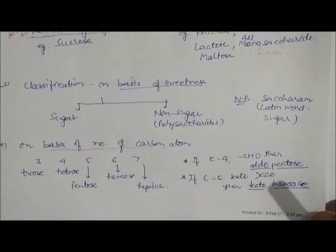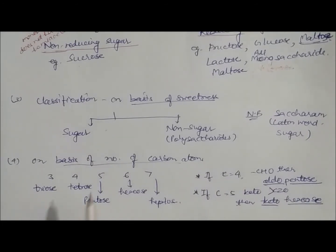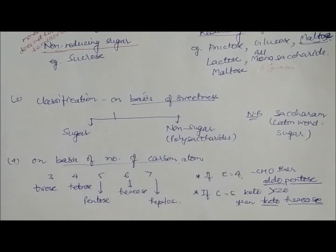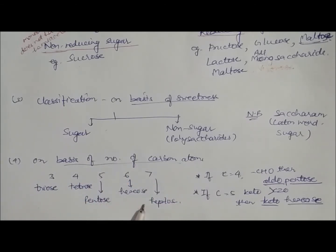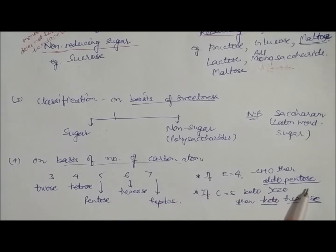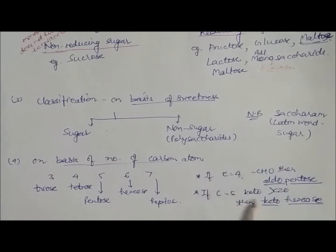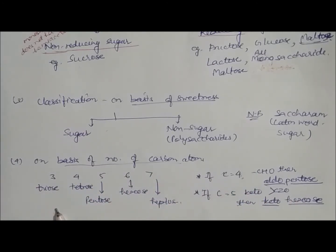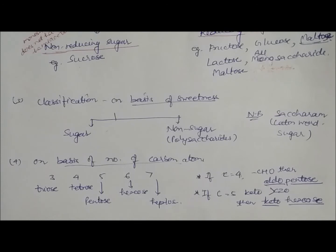On the basis of sweetness, carbohydrates are divided into sugars and non-sugars. Another classification is based on the number of carbon atoms: three, four, five, six, or seven. We divide them into aldoses and ketoses — for example, aldopentose and ketopentose. If C=3 it's triose, C=4 is tetrose, C=5 is pentose, C=6 is hexose, and C=7 is heptose.